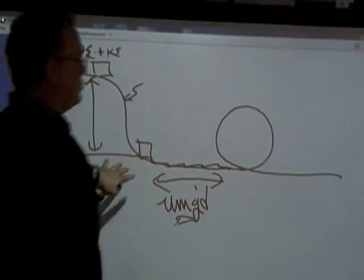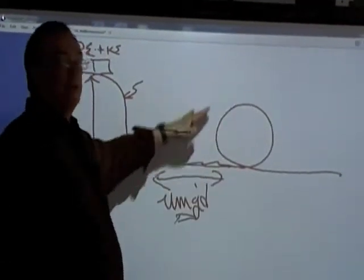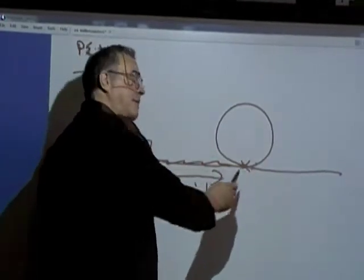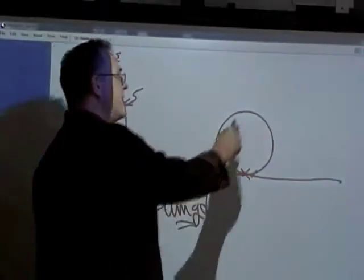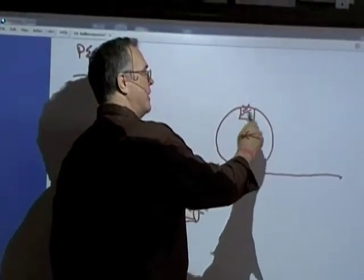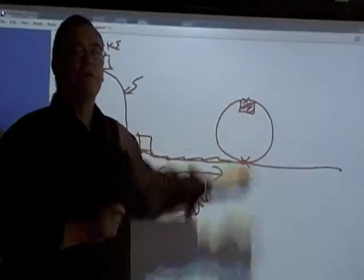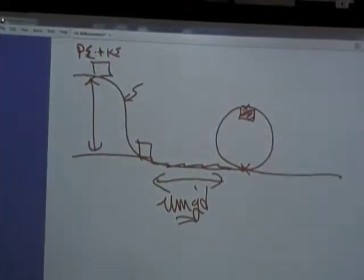Now it doesn't move. Down here what do I got? Kinetic, potential, both and neither? Kinetic. Up here, and the track is on the outside, so the cart looks like this. What do I have up here? Potential and kinetic.